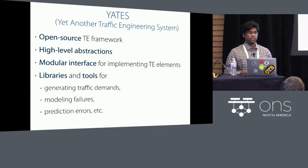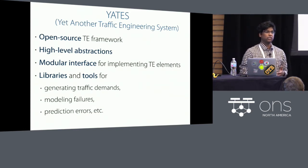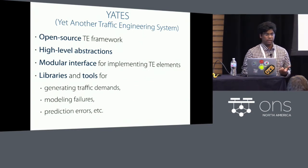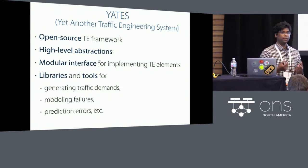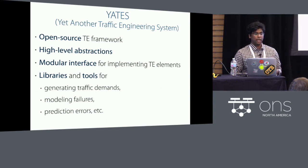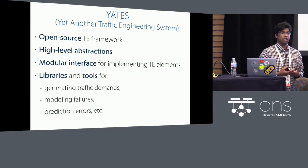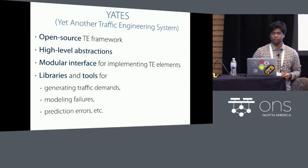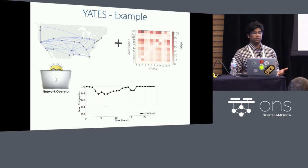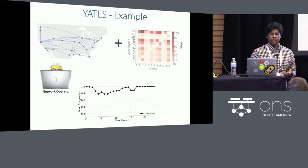Yates stands for Yet Another Traffic Engineering System. It is an open source traffic engineering framework that allows us to quickly prototype and evaluate many traffic engineering approaches. By providing high-level abstractions, it allows us to implement different traffic engineering systems and components of wide-area networks, such as representing topology and routing schemes. It exposes a modular interface by which we can implement different parts of a traffic engineering system and compose them together. With Yates, going back to our previous example, it is very easy to analyze the performance of CSPF versus ECMP for different link weights.